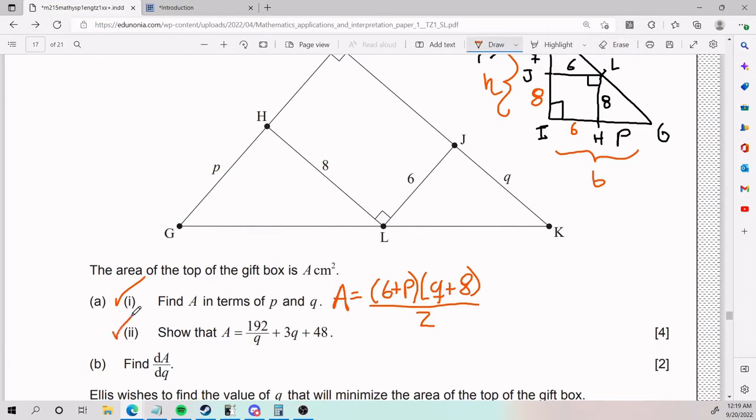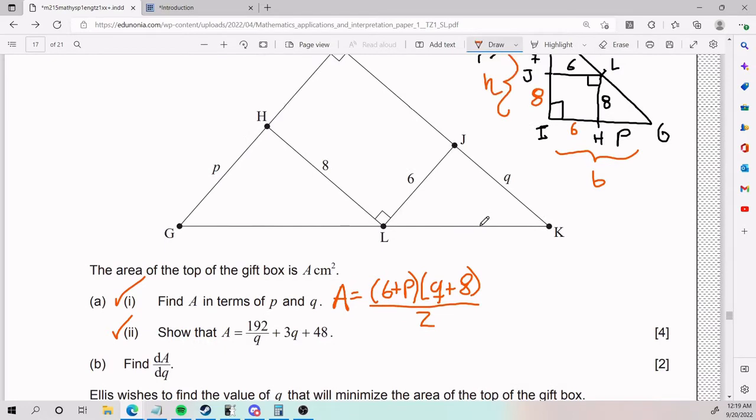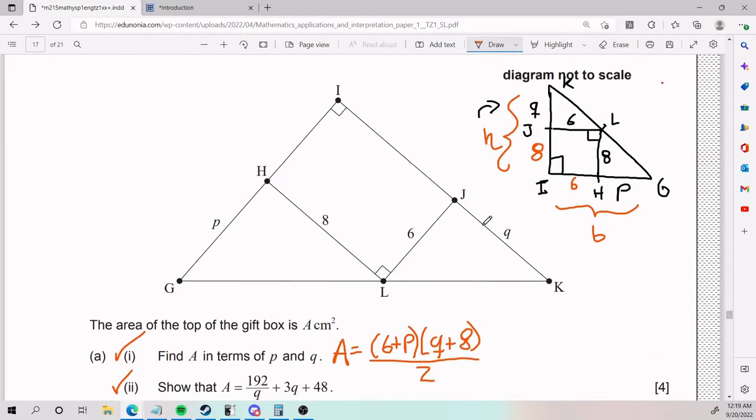And next, we need to show that A is that. Now, what is special about this? Notice that we have 192 divided by Q plus 3Q plus 48. There is no P. So you need to find a way to say P equals something Q and plug in Q. So that is our current goal. We need to find ways to link both equations. We need to find a way to relate P and Q. That is our biggest challenge right now.